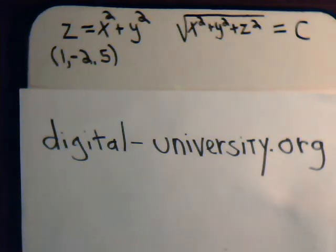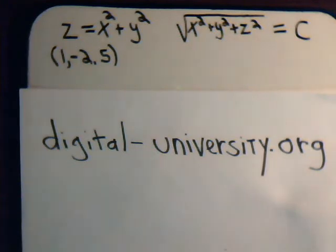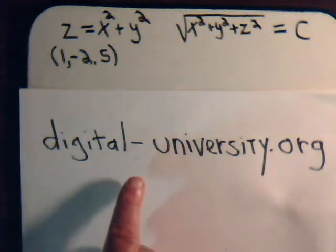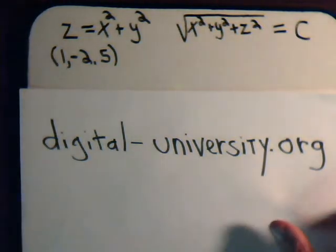In the last video in our series on vector analysis, we learned how to use the del operator and the gradient to find a unit normal vector for a three-dimensional surface. In this video we're going to work two more examples. The playlist for the series on vector analysis is at the website digital-university.org.